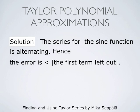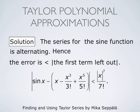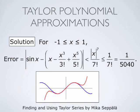The Maclaurin series for the sine function is alternating, so the error of this approximation has absolute value strictly less than the absolute value of the first term left out. That is, the absolute value of the error is strictly less than the absolute value of x to the power 7 over 7 factorial. When x is between negative 1 and 1, the absolute value of x to the power 7 is at most 1, so the error is bounded by 1 over 7 factorial, which is 1 over 5040. We got a pretty good approximation with not much work at all.